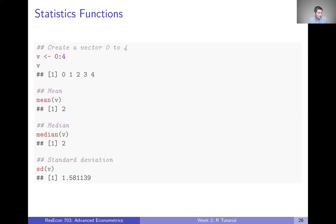There are also statistical functions you can use. To show some examples, let's create a vector object called V, which is going to be a numeric vector from 0 to 4. The first line assigns this sequential vector from 0 to 4. So we type in V and we get 0, 1, 2, 3, 4. We can find the mean, the median, the standard deviation — all those basic statistical moments or objects we might be interested in.